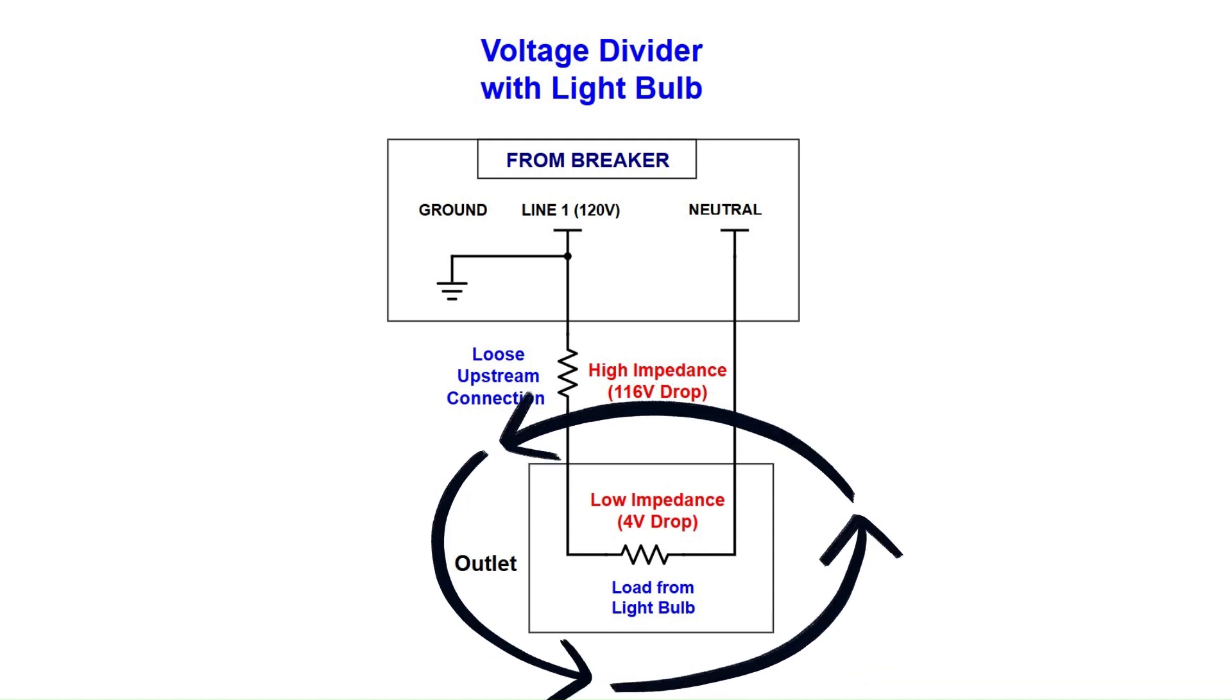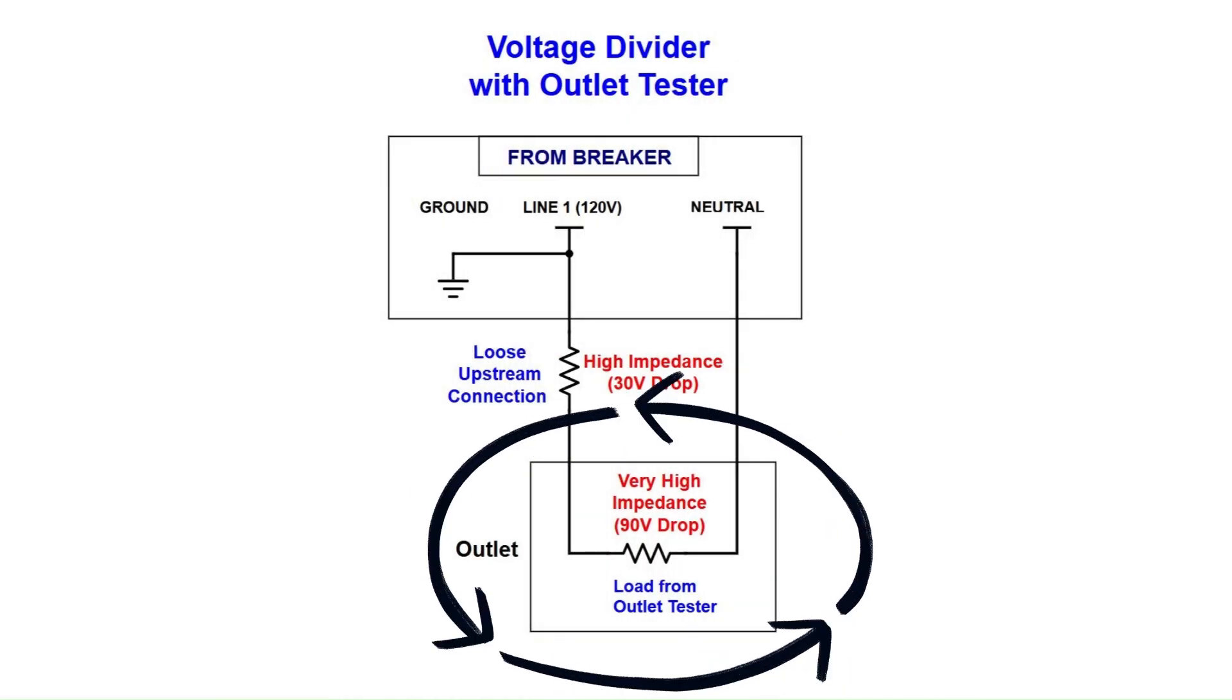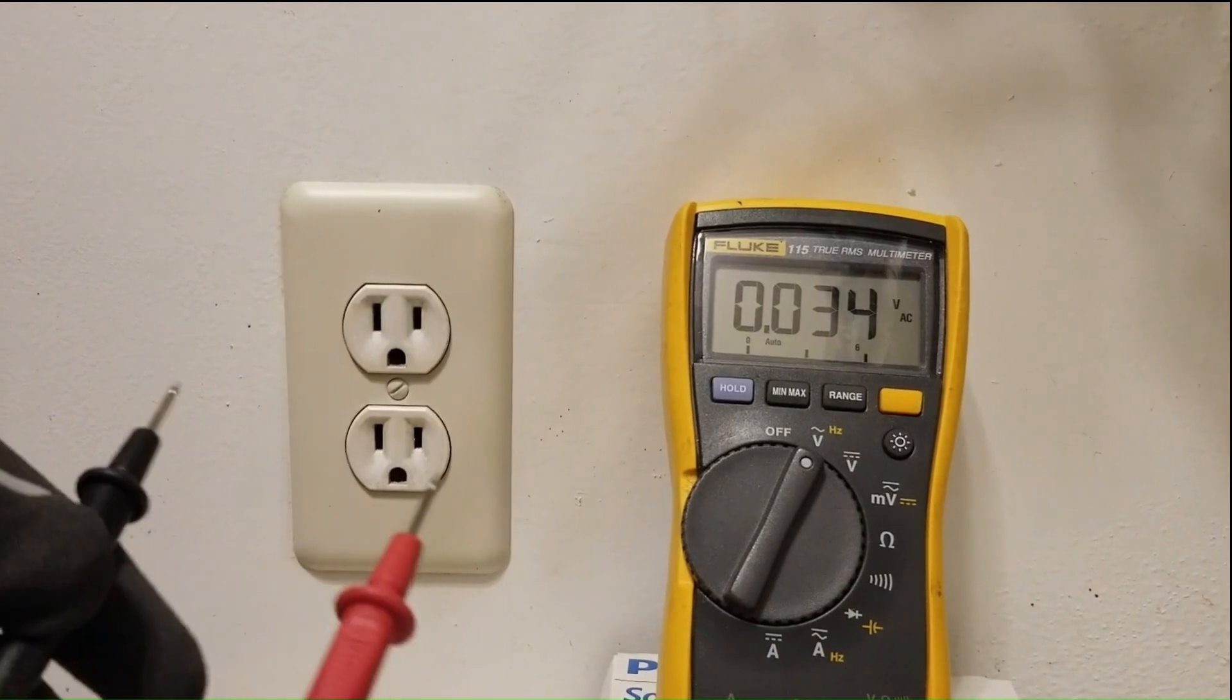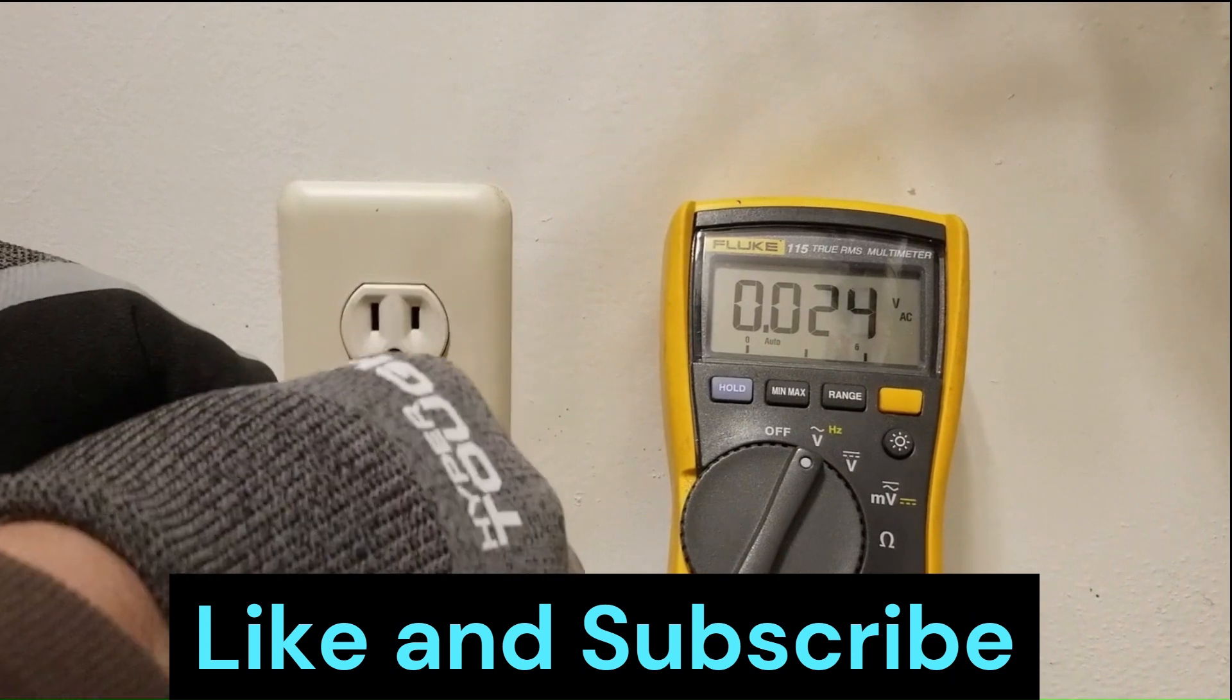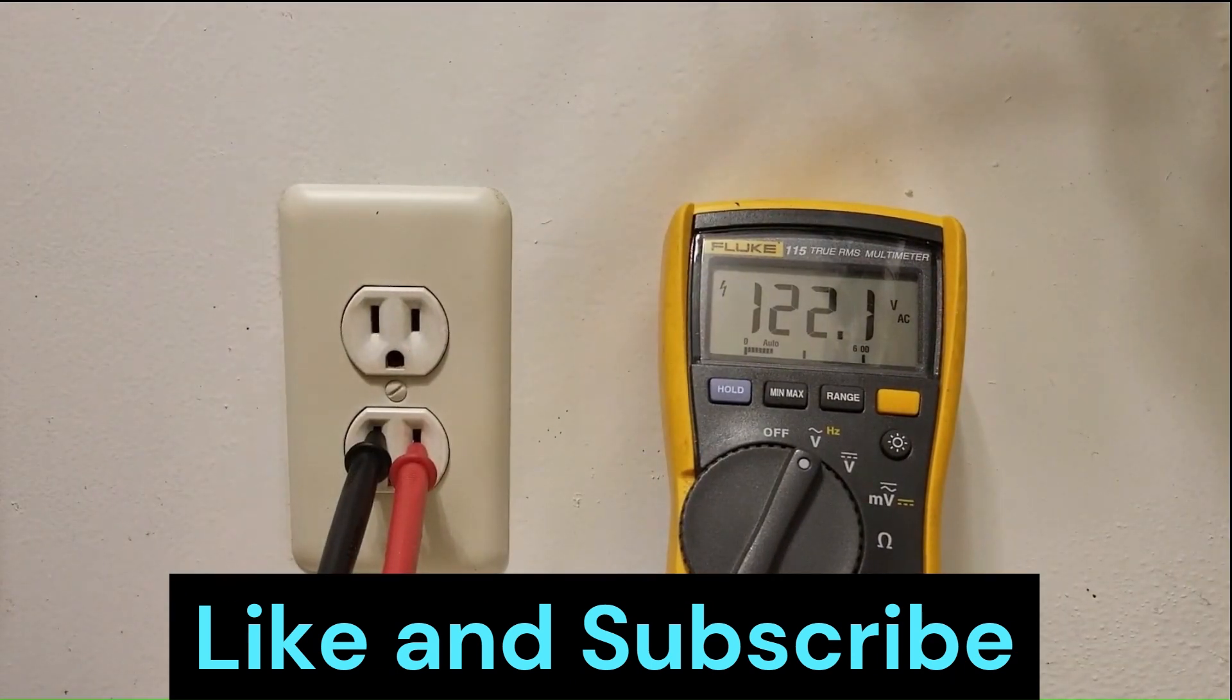A topic for another video, but in short, the needed voltage is lost across that loose connection, leaving little to nothing available for an actual load connected to the outlet. On the other hand, when you remove the load and plug in the outlet tester, the high input impedance of the tester results in a false reading.